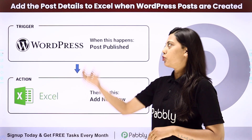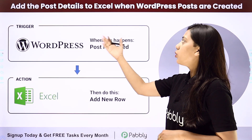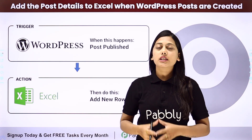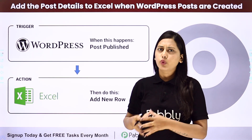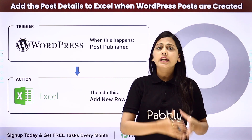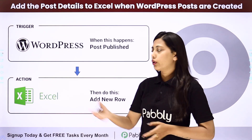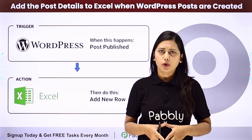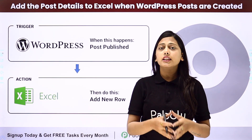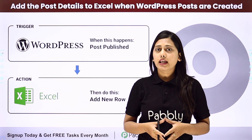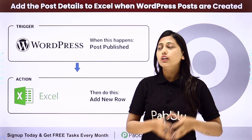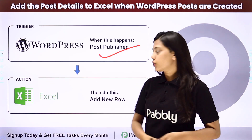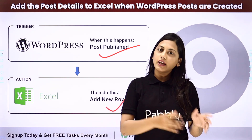Hello everyone, today we will learn how to add post details to Excel when new WordPress posts are created. Every time you create and publish a post in WordPress, the details should automatically be added to your Excel workbook as a new row. We will be creating this automation with Pabbly Connect, where the trigger will be post published in WordPress and the action will be a new row added in Excel.